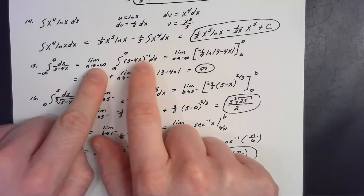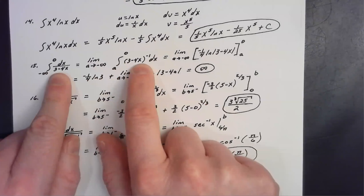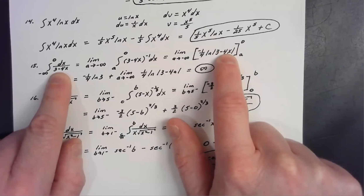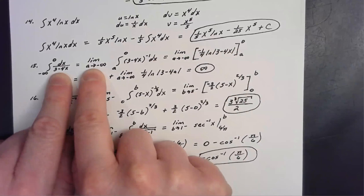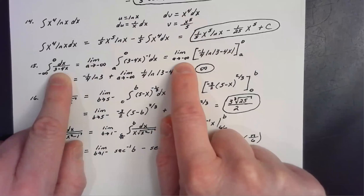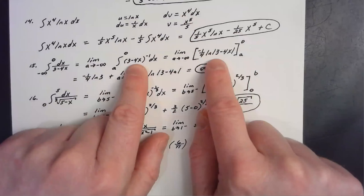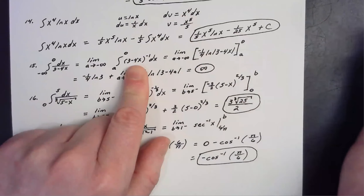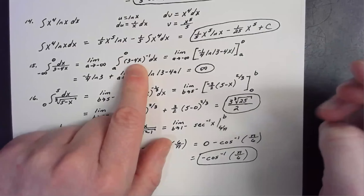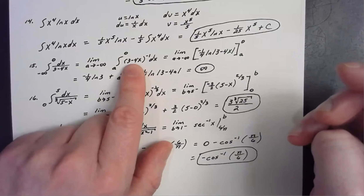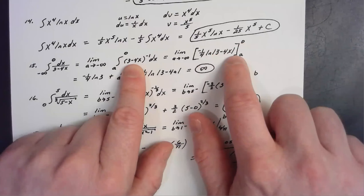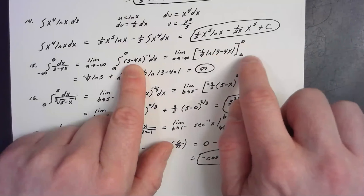I rewrite (3 − 4x) to the negative one and integrate using the rule: a group to the negative one power gives the natural log of the absolute value of that group, divided by the derivative of what's inside. This yields −1/4 ln|3 − 4x|, evaluated from A to zero. I keep the limit as A approaches negative infinity until I physically plug A in for x.